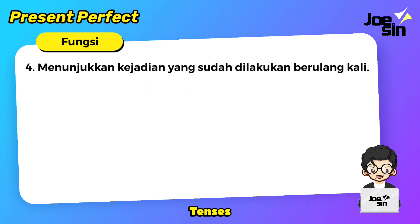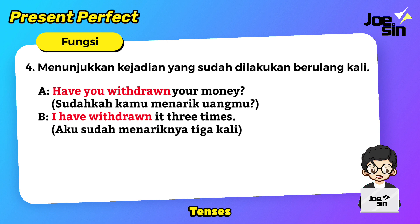Fungsi yang keempat adalah menunjukkan kejadian yang sudah dilakukan berulang kali. Contohnya: have you withdrawn your money? — sudahkah kamu menarik uangmu? I have withdrawn it three times — aku sudah menariknya tiga kali. Ada aktivitas yaitu menarik uang, ada yang tanya sudah belum, lalu dijawab sudah, tiga kali. Jadi menunjukkan kegiatan yang sudah dilakukan berulang-ulang.